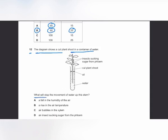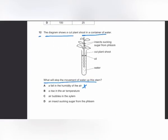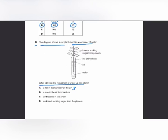MCQ number 12: what will stop the movement of water up a plant stem? A fall in humidity increases transpiration, so more water travels up the xylem — water uptake will not stop. A rise in air temperature also increases transpiration, so more water is taken up.